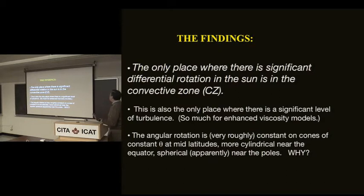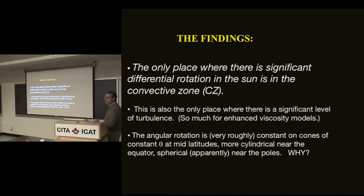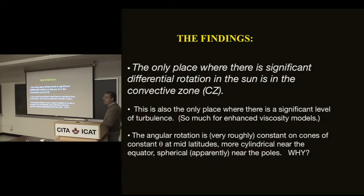Let me just cut to the chase and tell you what the basic findings are, because the physics is quite interesting. The only place in the sun — presumably other stars as well — where there is significant differential rotation is in the convective zone. The radiative interior, through an excellent approximation, is rotating uniformly. The convective zone is the only place where you see any differential rotation. This, by definition, is the only place where there is a significant level of turbulence.